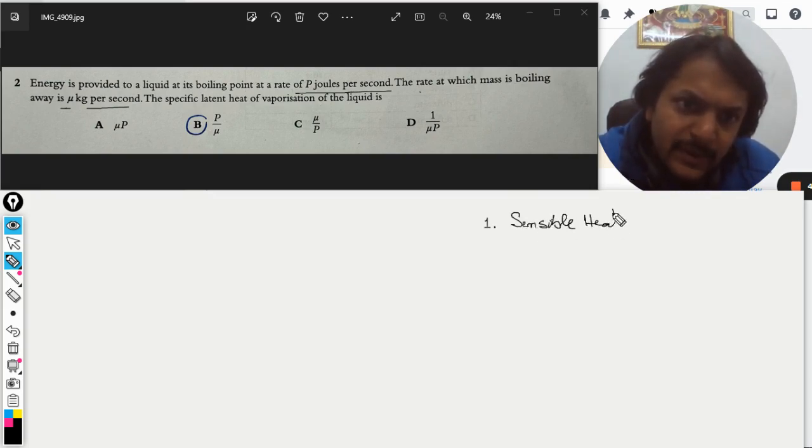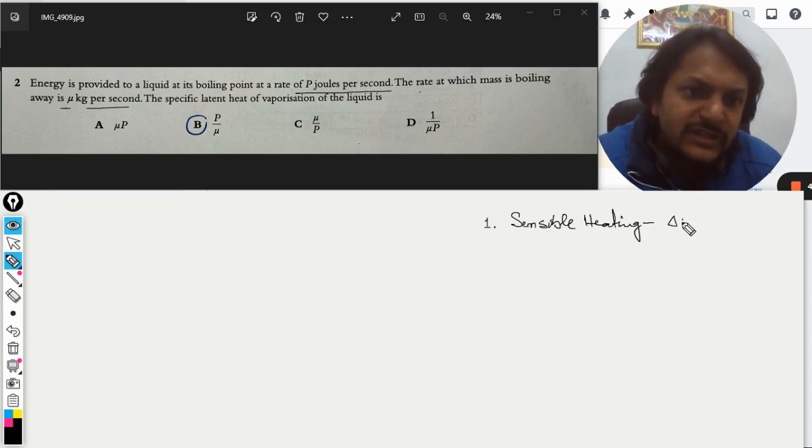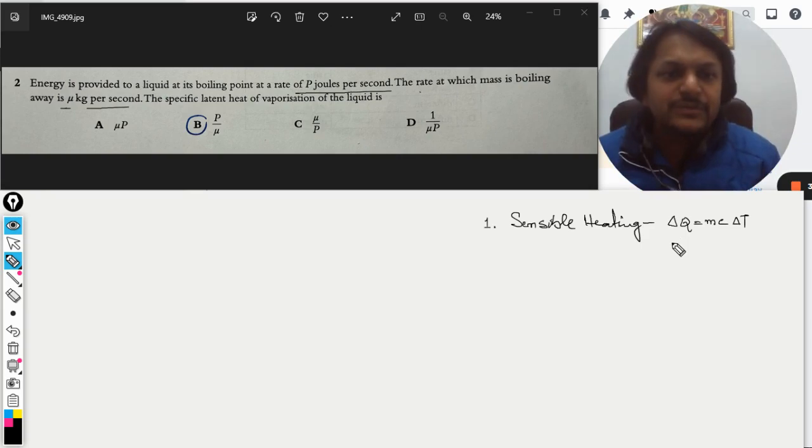The formula for this is ΔQ equals mc ΔT. ΔQ is the heat that is given to the substance, m is the mass of the substance, c is the specific heat, and ΔT is the change in temperature that was brought up.